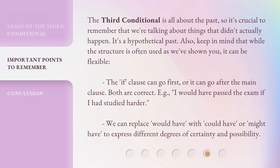The Third Conditional is all about the past, so it's crucial to remember that we're talking about things that didn't actually happen — it's a hypothetical past. Also, keep in mind that while the structure is often used as shown, it can be flexible. The 'if' clause can go first, or it can go after the main clause — both are correct. For example: 'I would have passed the exam if I had studied harder.' We can also replace 'would have' with 'could have' or 'might have' to express different degrees of certainty and possibility.